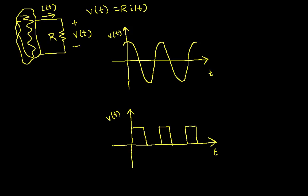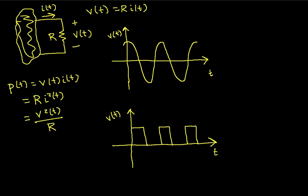We can do this by first computing the instantaneous power. At any point in time, the instantaneous power is the voltage times the current. Because we're dealing with a resistor, I can also write this as the resistance times the current squared, or as the voltage squared divided by the resistance.